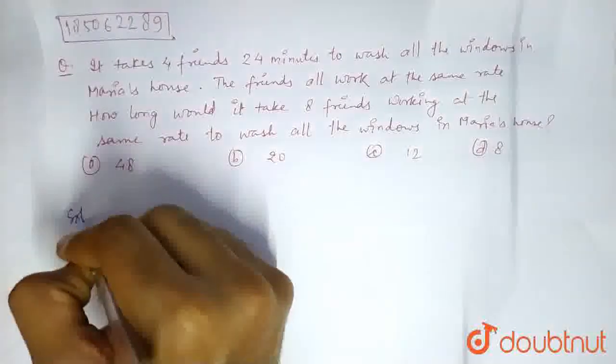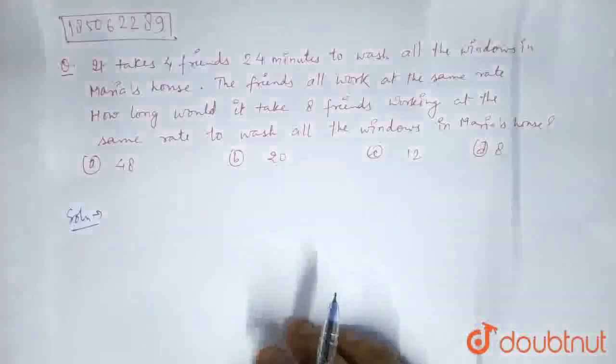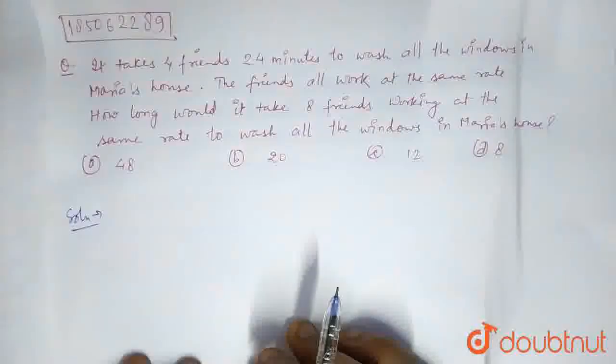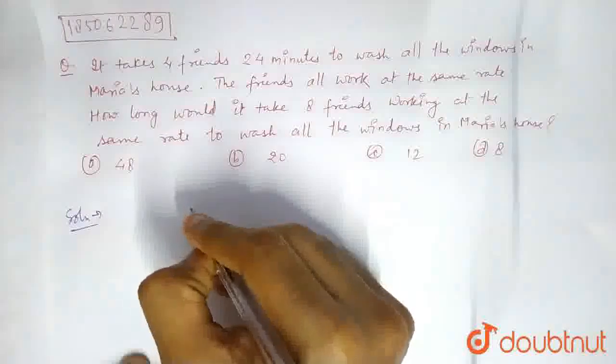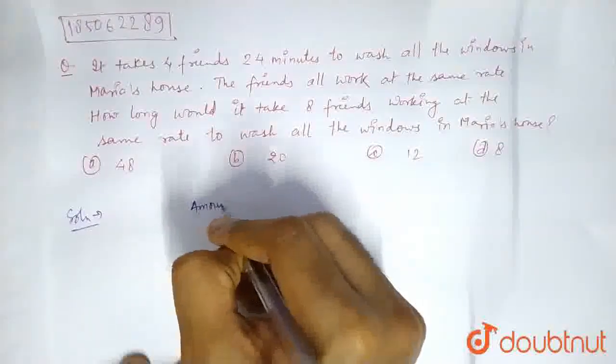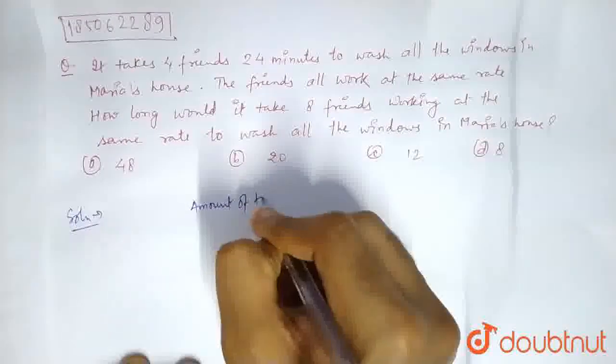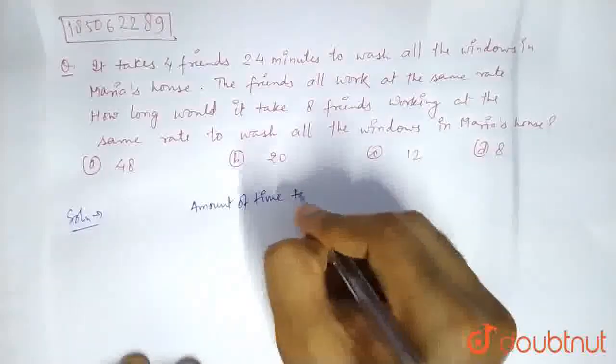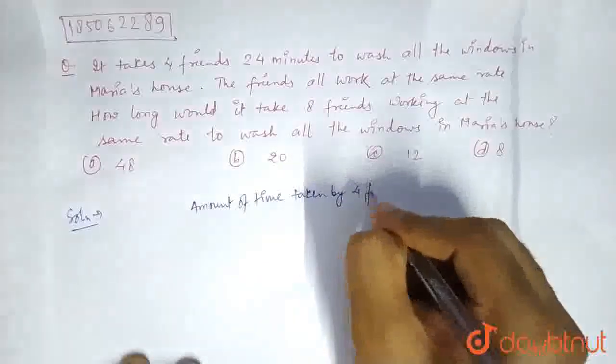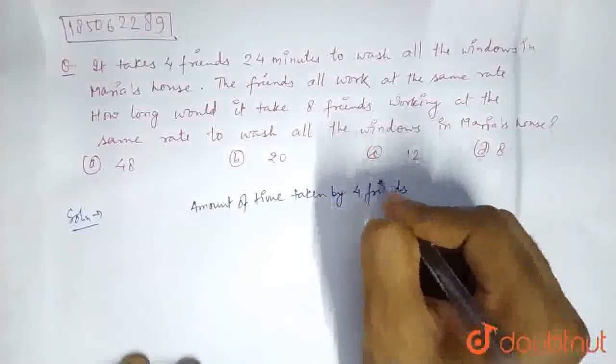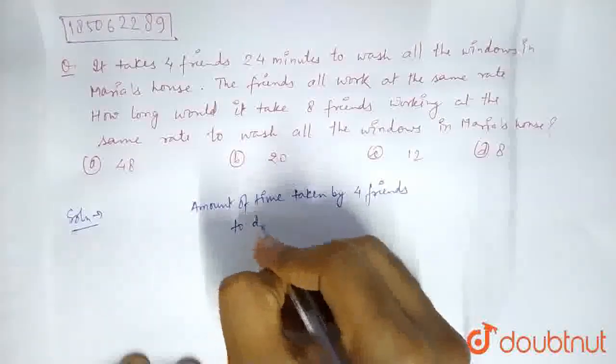Okay, so the solution will start with writing down the given conditions. The given conditions are: amount of time taken by 4 friends to do the job.